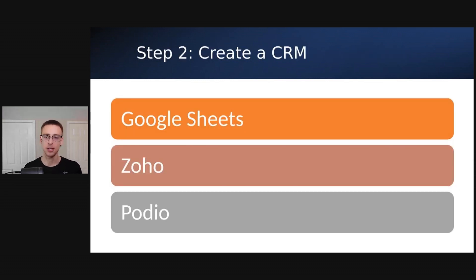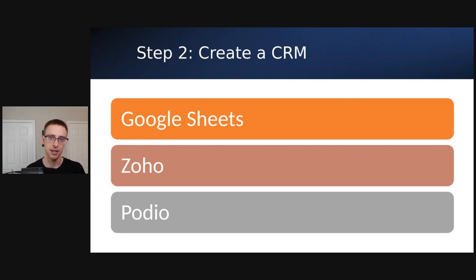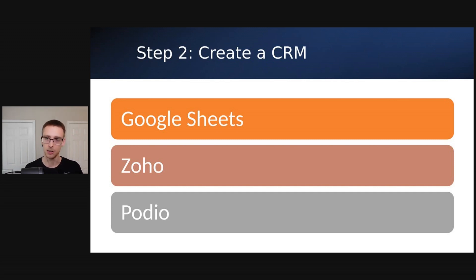Step two is going to be creating a CRM. A CRM is a customer relations manager, and that's basically to help you track your follow-ups and leads. There are a bunch of free solutions out there. The top three I would recommend would probably be Google Sheets — you can just create an Excel spreadsheet — Zoho, and Podio. These are the top three that I think would be the easiest to use.